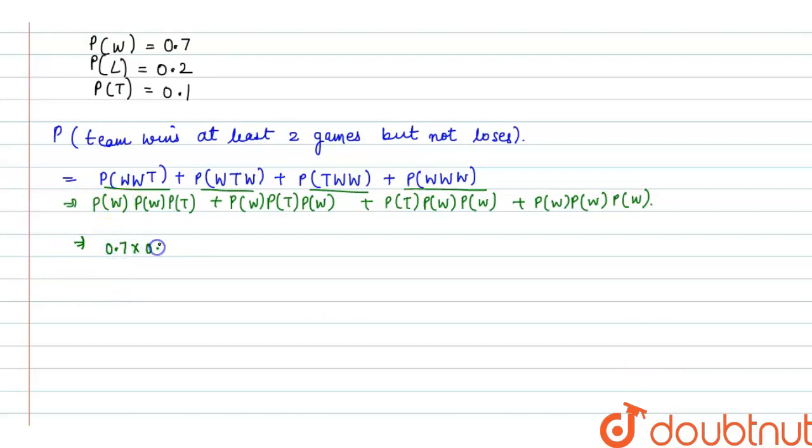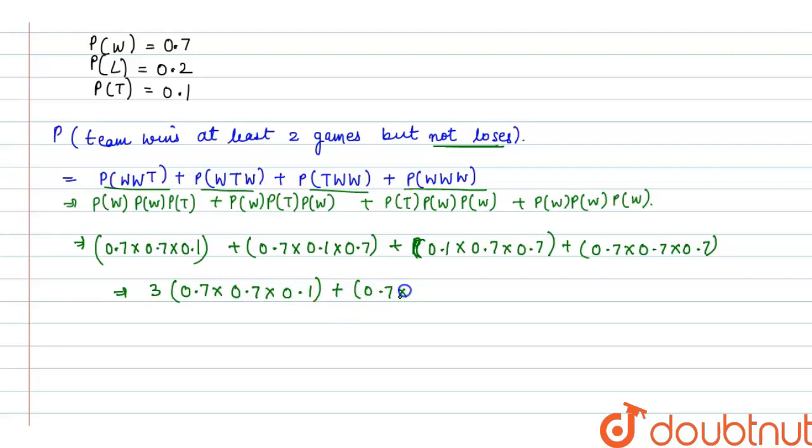So we have to put the values and solve it. 0.7 into 0.7 into 0.1 plus 0.7 into 0.1 into 0.7. We don't use the probability of loss in any part because according to the question team win at least two games but not losses. So again 0.1 into 0.7 into 0.7 plus 0.7 win win win. The first three cases are completely same so we can write it as 3 into 0.7 into 0.7 into 0.1 plus 0.7 into 0.7 into 0.7.